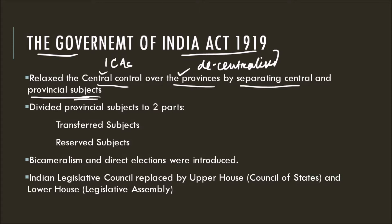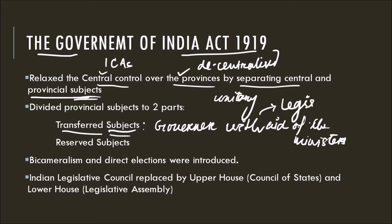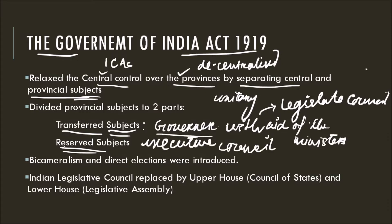But till now, the structure of government was unitary. They further divided the provincial subjects into two parts: transferred subjects and reserved subjects. The transferred subjects were to be administered by the Governor with the aid of Ministers, and they are responsible to the Legislative Council. But in the case of reserved subjects, they were to be administered by the Governor and his Executive Council without being responsible to the Legislative Council.